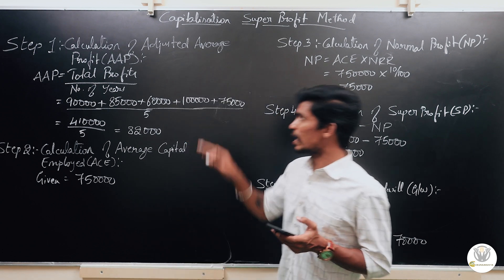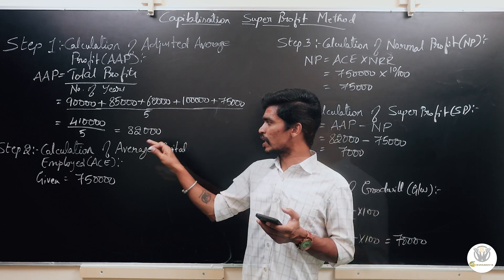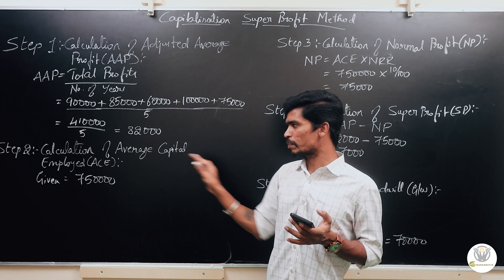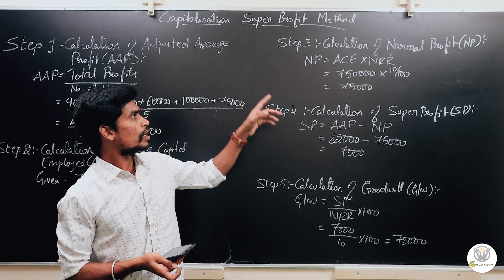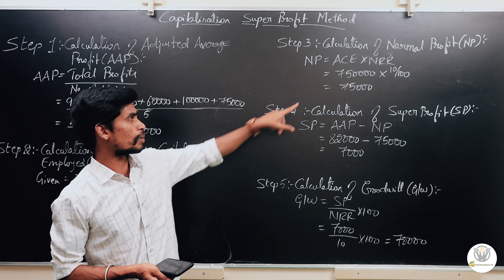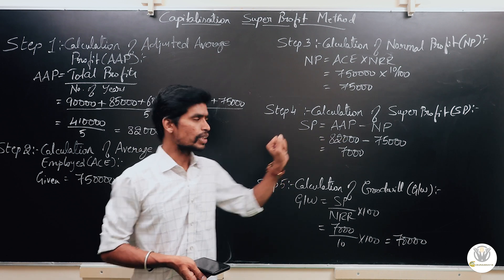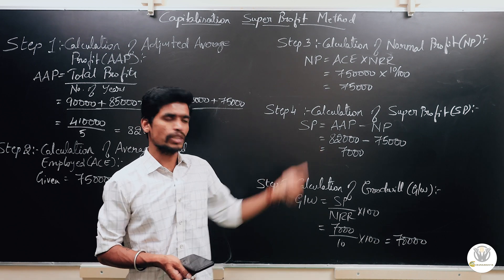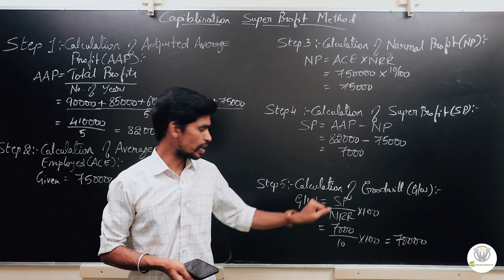To summarize question 18: AAP is Rs. 82,000 from the 5-year profits. Capital employed is Rs. 7,50,000, which is also the average capital employed. Normal profit is Rs. 75,000. Super profit is AAP minus NP: Rs. 82,000 minus Rs. 75,000 equals Rs. 7,000. Goodwill equals super profit divided by NRR 10% into 100, giving a goodwill value of Rs. 70,000.